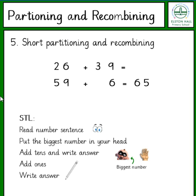We can also do short partitioning and recombining another way. We put the bigger number in our head first — 39. Then we add on the 10s. So 39 in my head, two 10s on my fingers: 39, 49, 59. I write this answer down. All I need to add then is the ones of the other number. So 59 in my head, add on 6: 59, 60, 61, 62, 63, 64, 65.